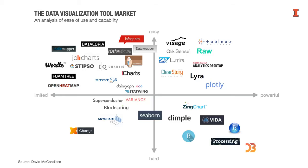On the horizontal axis, we have tools ranging from those that don't handle a great deal of data — the analysis gadgets — all the way through to tools that handle a great deal of data, those enterprise solutions. On the vertical axis, we place ease of use: those that are harder to use go at the bottom, those that are easier to use go at the top.